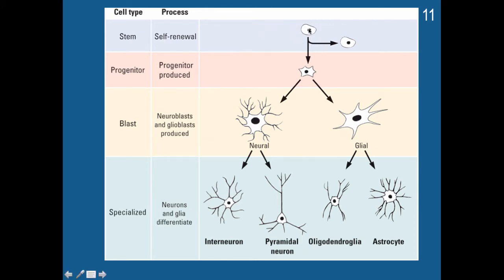Here is an example of a stem cell with a unique ability for self-renewal, and then here is a progenitor cell. The progenitor cell can become either a neuroblast or a glial blast. Neuroblasts become neurons, and glial blasts become glial cells. At this neuroblast or glial blast stage is when the cells start to become specialized — an interneuron is different than a pyramidal neuron, and an oligodendroglial cell is different from an astrocyte — but all of these different types of neurons and glial cells begin with a stem cell.